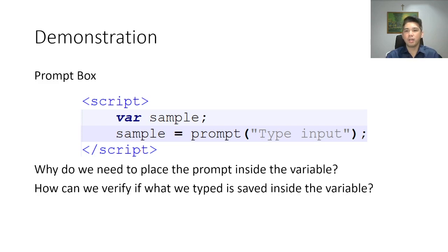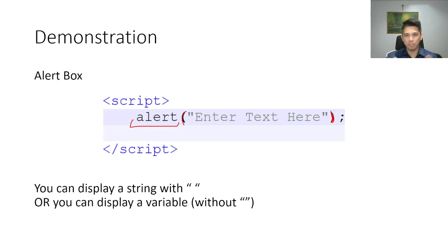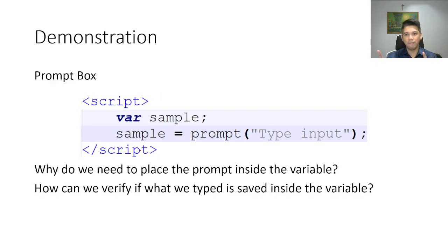As you can see, there is an upgrade from the alert box to the prompt box — in the prompt box, we need a variable so that the value the user places will have a container, and that container will be used later on inside our program.